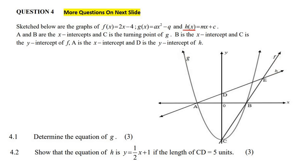A and B are the X-intercepts, and C is the turning point. B is the X-intercept, and C is the Y-intercept of that graph. Okay, so we've got all of that.